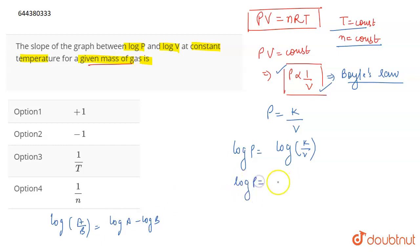So, this will become log P is equal to log K minus log V. This is how you will write it.